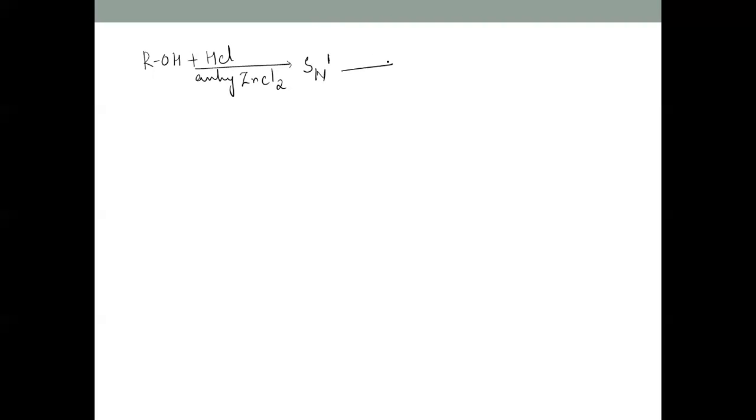Let's understand this with the help of the mechanism. The mechanism followed for the reaction of alcohols with the Lucas reagent in the presence of anhydrous zinc chloride is SN1 — that is, nucleophilic substitution, unimolecular reaction. It proceeds through a carbocation intermediate.